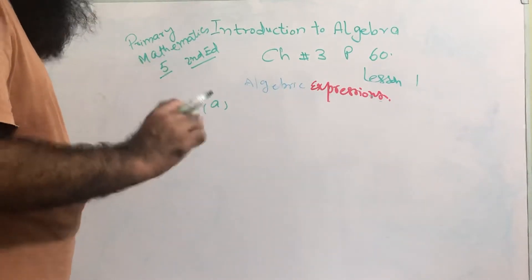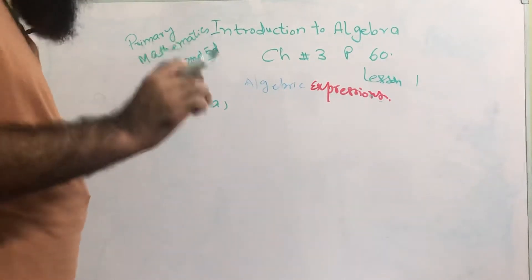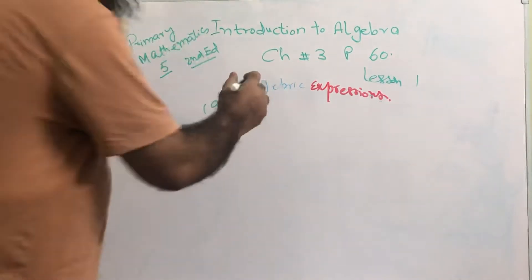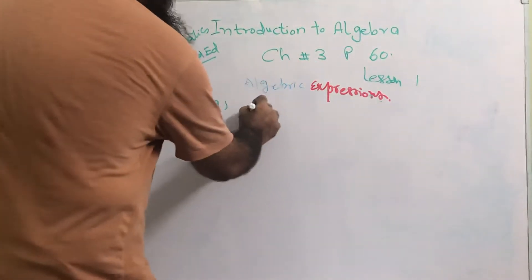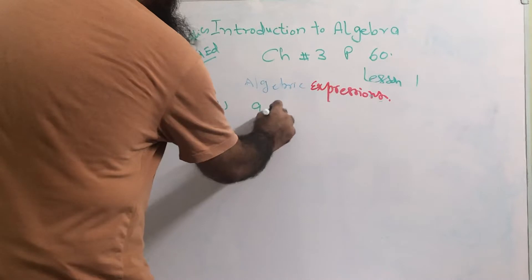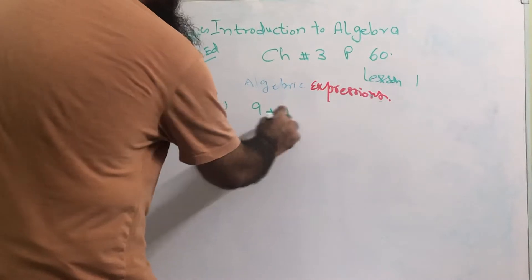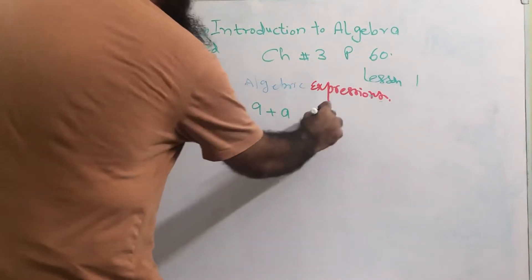Part a is: add a to 9. If you have 9 you need to add a, so the answer is a + 9.